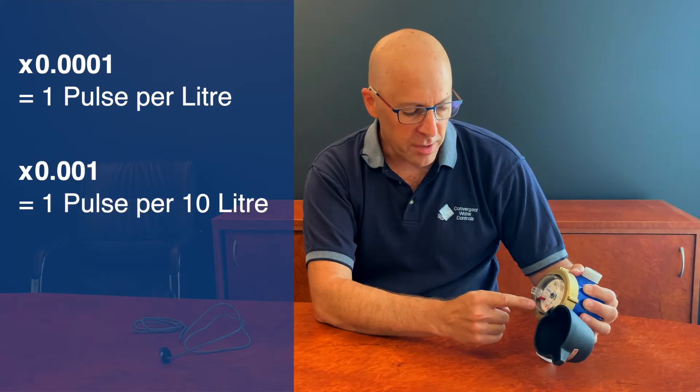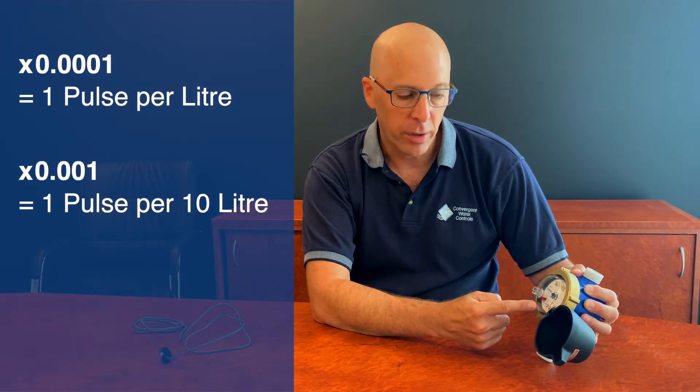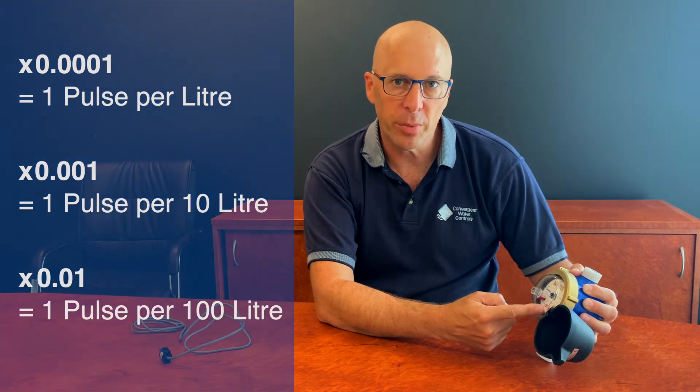If the pulse cable was on the center dial, it would be 1 pulse per 10 liter, and on the right dial, 1 pulse per 100 liter.